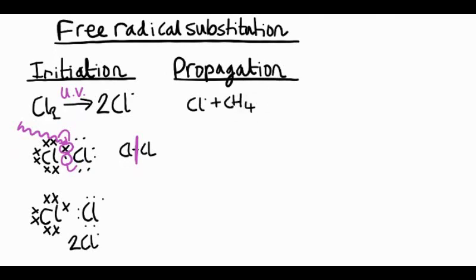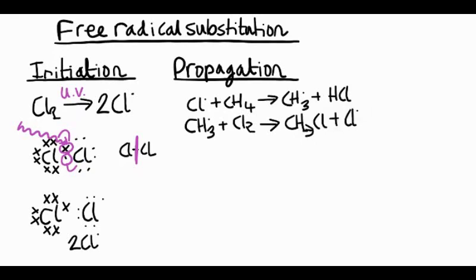Chlorine radical plus methane gives a methyl radical, CH3 dot, plus HCl. And then if we take our methyl radical and react it with another chlorine molecule, we get chloromethane plus a chlorine radical. That chlorine radical that's been formed can then carry on the reaction with further propagation steps, further substitution.